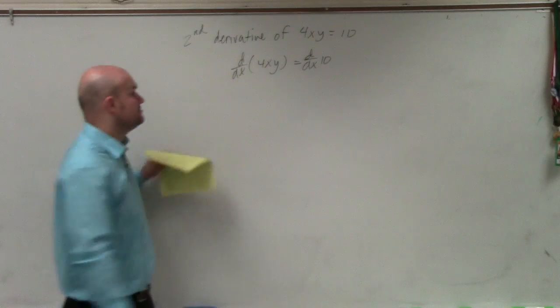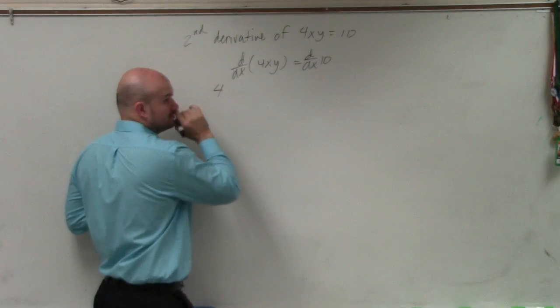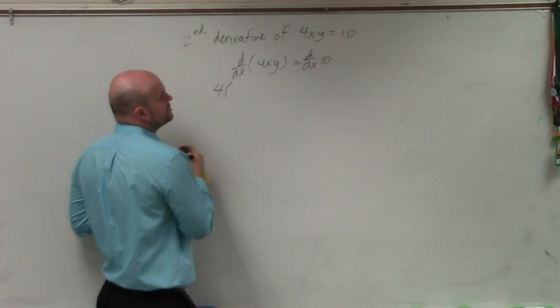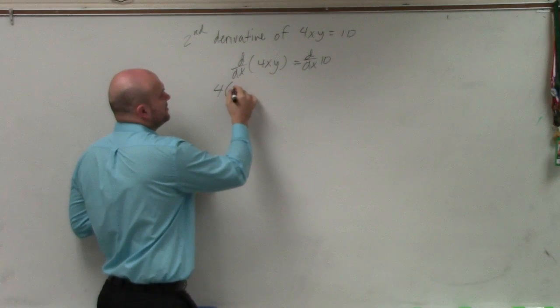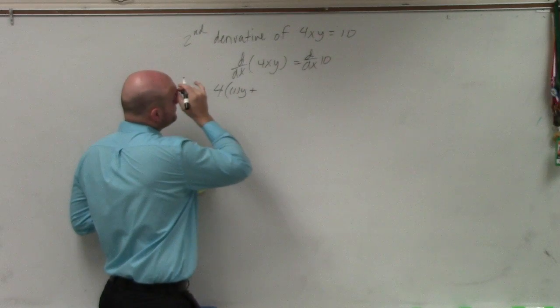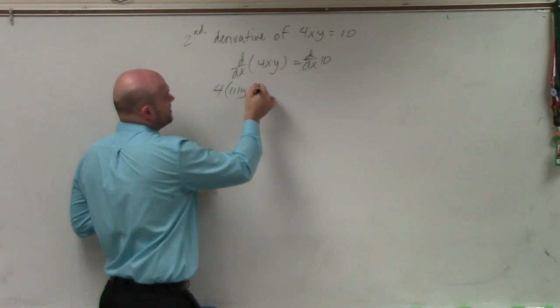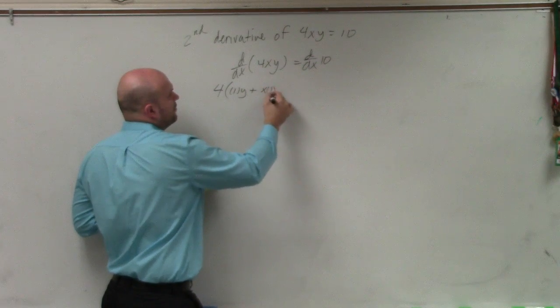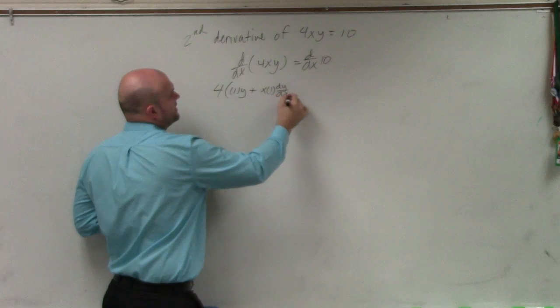We notice here we have to do the chain rule. So we can take out the 4. And by taking out these 4, we're doing the chain rule, which is basically going to be 1 times y plus you're going to have x times 1 dy over dx.